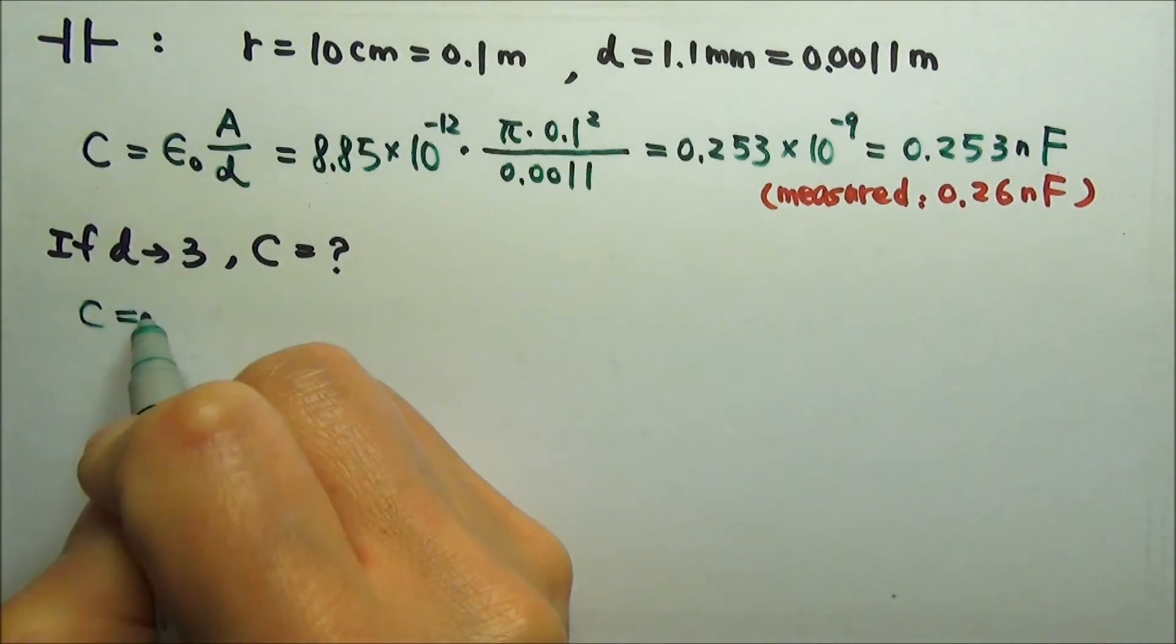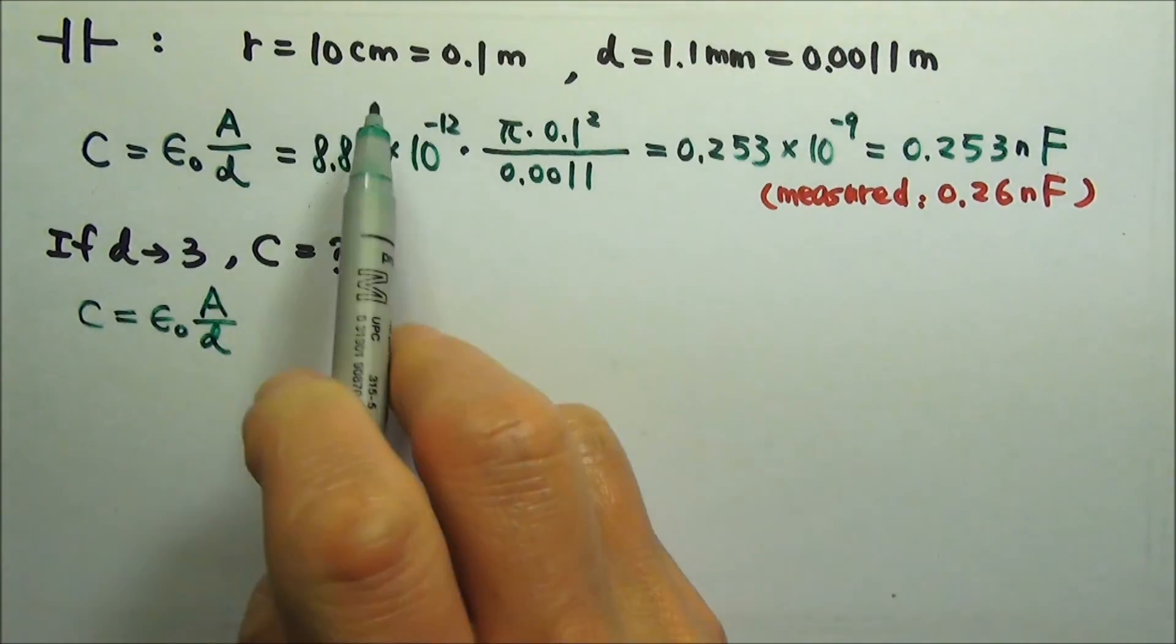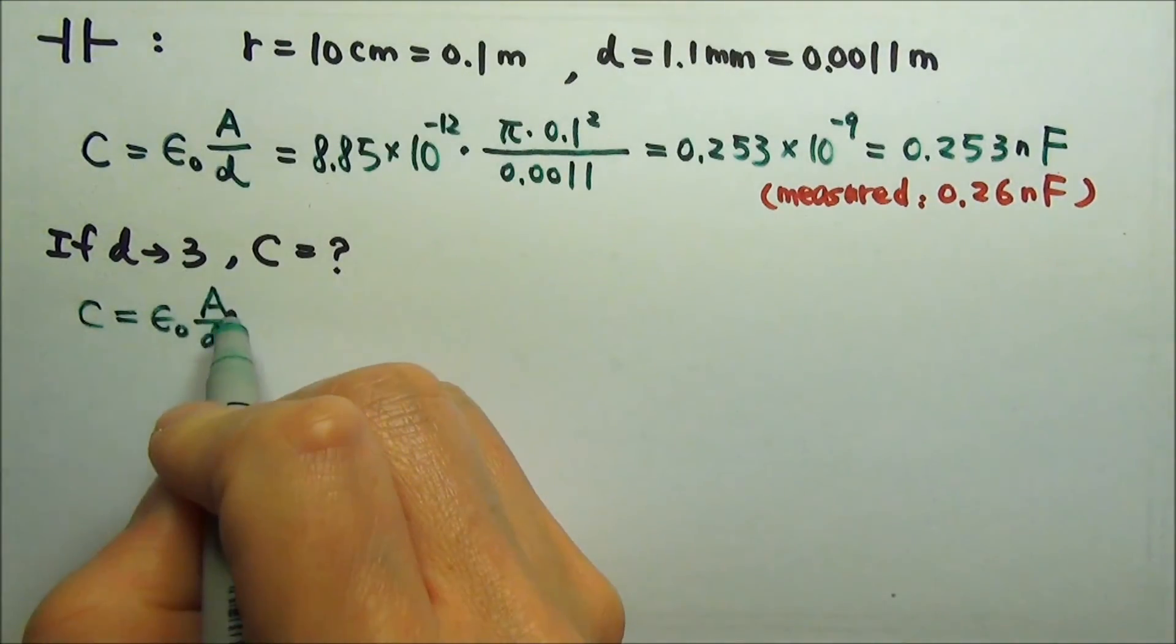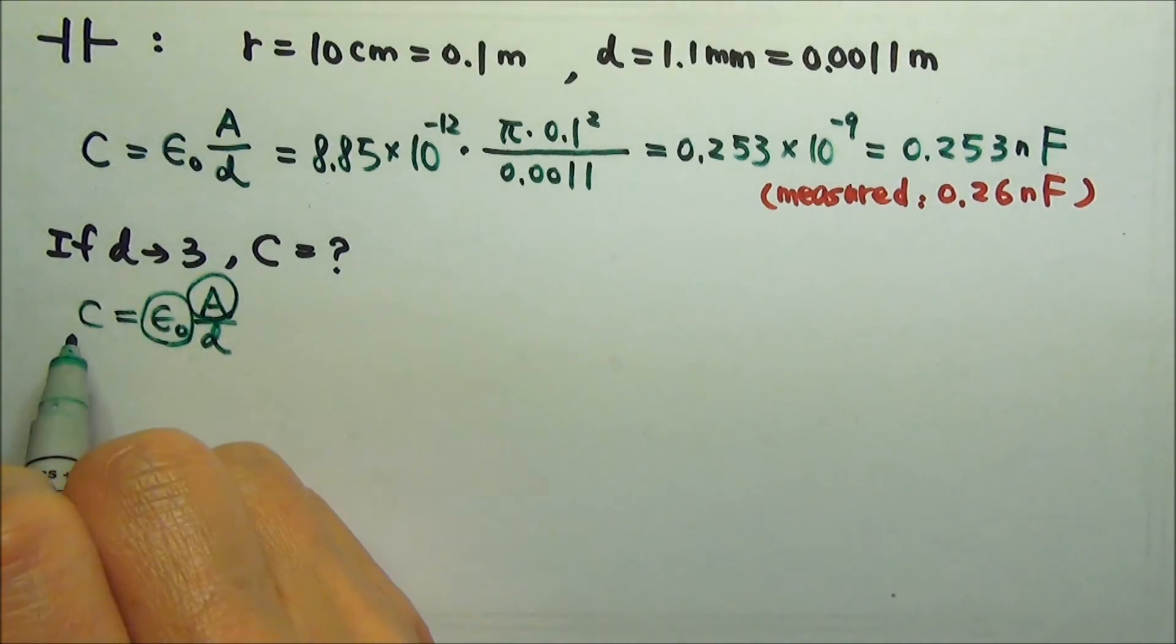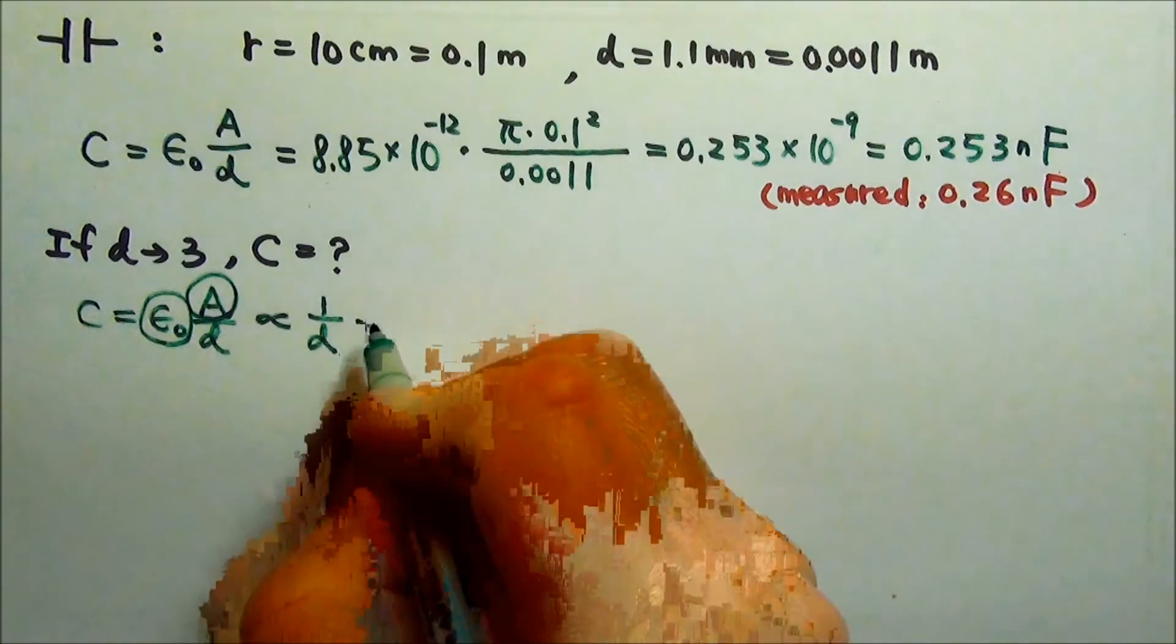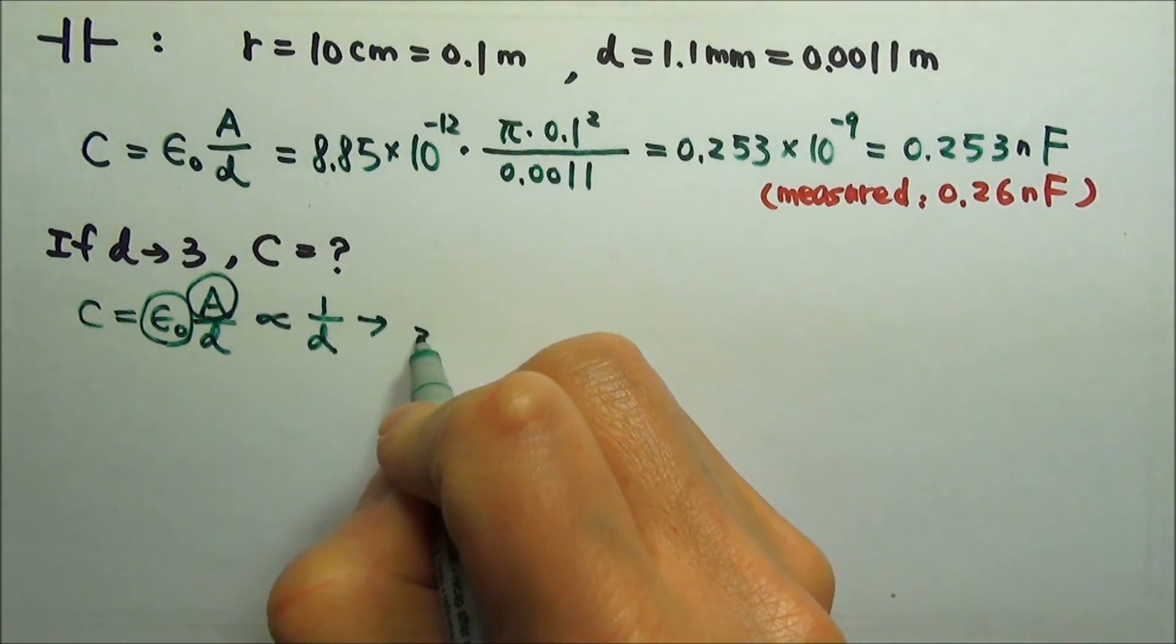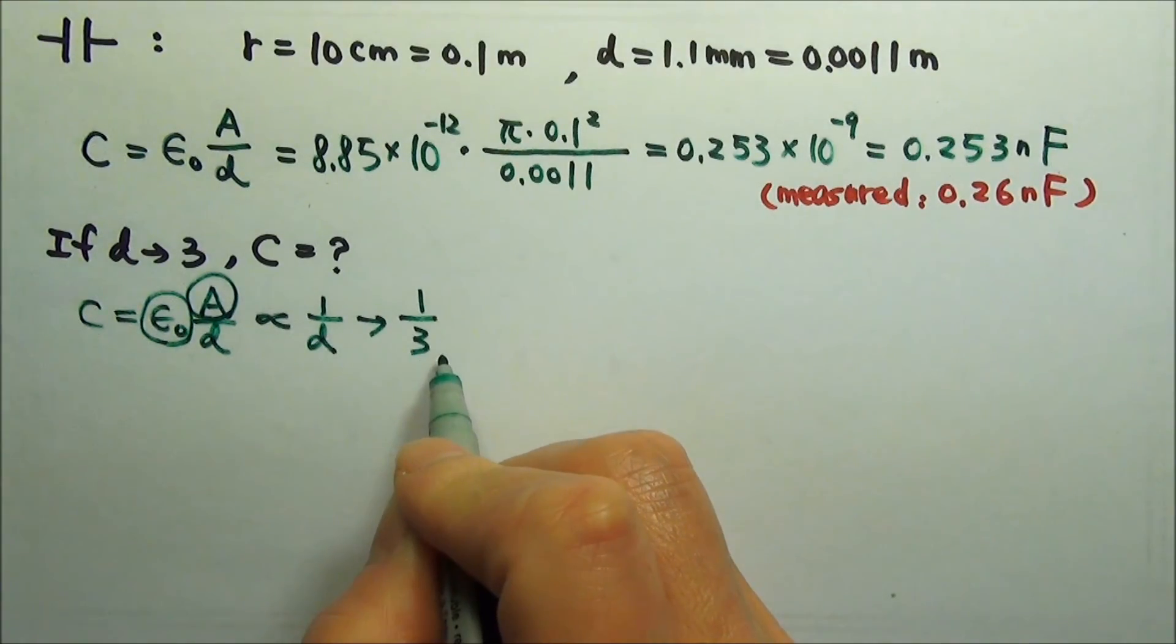Since C equals epsilon naught A over D, we're keeping the cross-sectional area the same. And epsilon naught, of course, is a constant. That means C is proportional to 1 over D. When D triples, the capacitance changes by a factor of one-third.